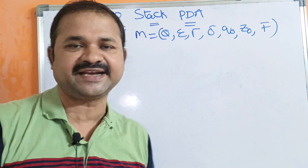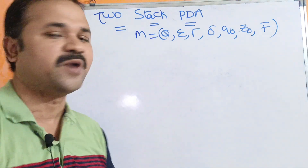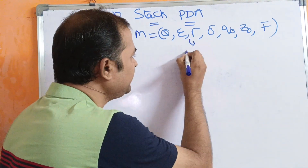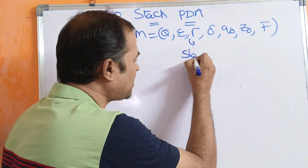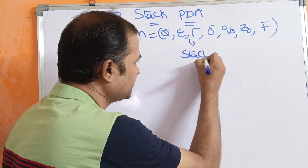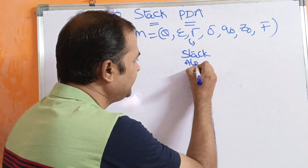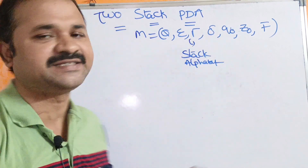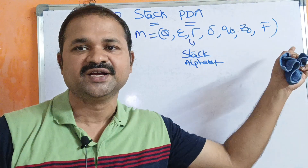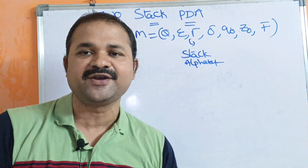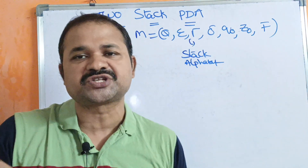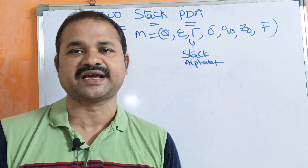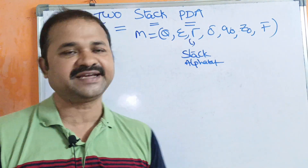Q means a set of states. Sigma means input alphabet. Tau means stack alphabet. Delta is a transition function. Q0 means initial state. Z0 means the topmost symbol in the stack. F means final state.